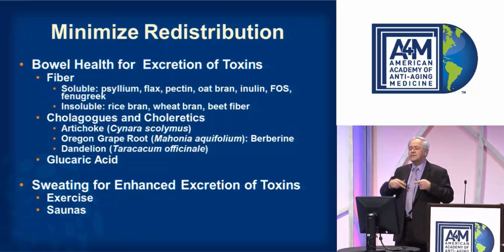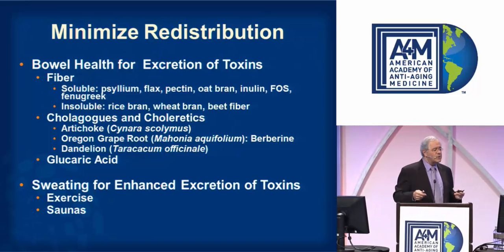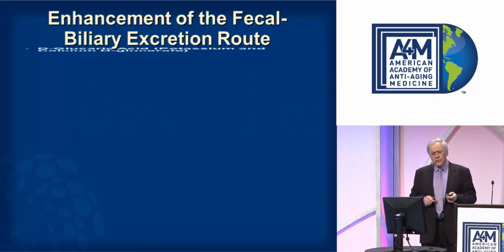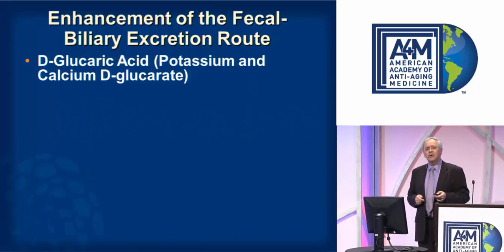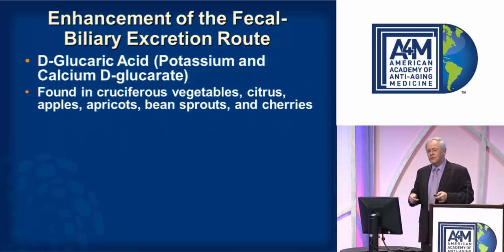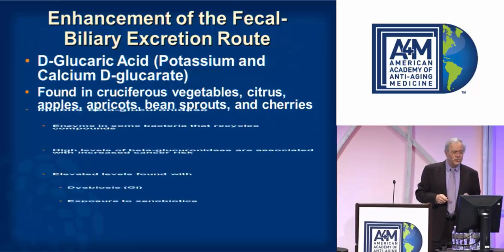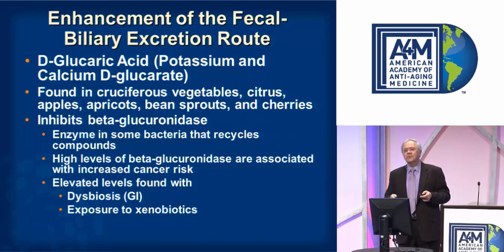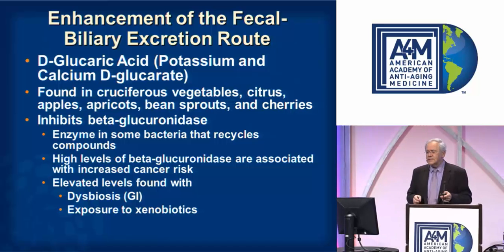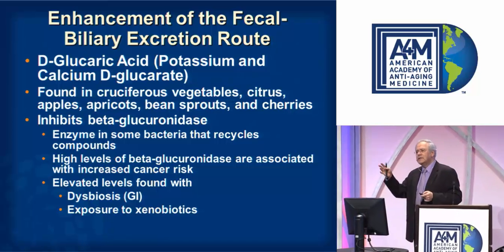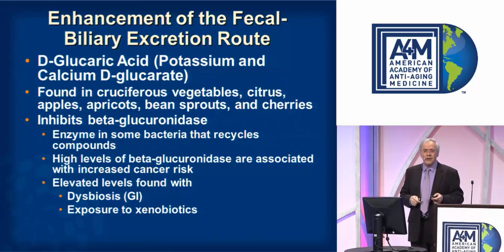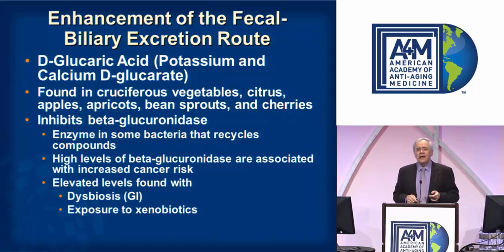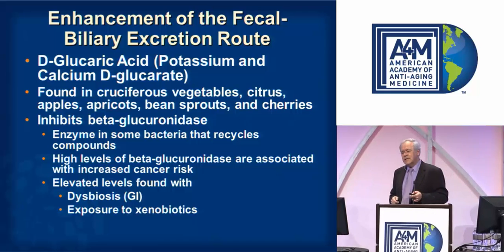Sweating also enhances the excretion of toxicants, induced with exercise or sauna work. Enhancing fecal excretion through the biliary route — D-glucaric acid is very helpful for this and is found in cruciferous vegetables, citrus fruits, apples, apricots, and so on. D-glucaric acid inhibits the enzyme beta-glucuronidase found in gut bacteria. This enzyme can cleave toxicants that have attached themselves to bile, allowing those toxicants to be recycled back into the body. Adding D-glucaric acid helps control beta-glucuronidase.